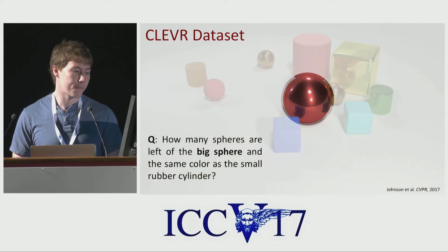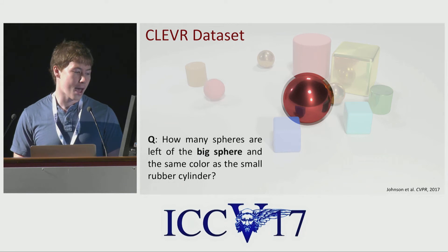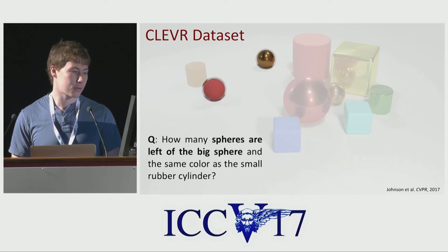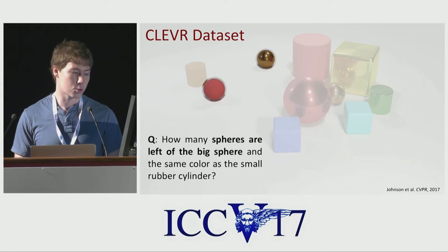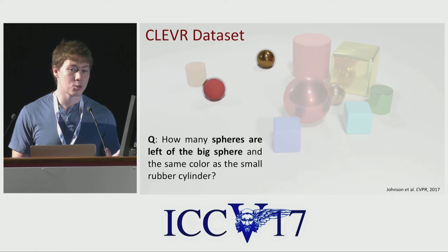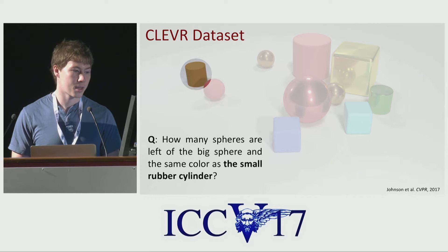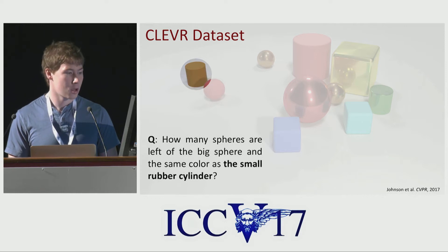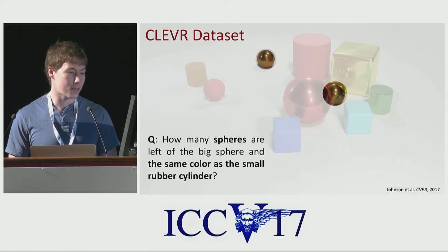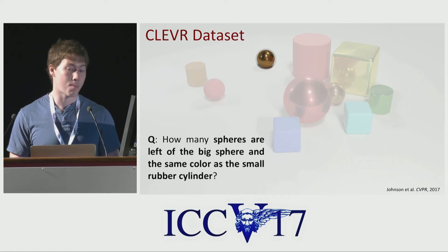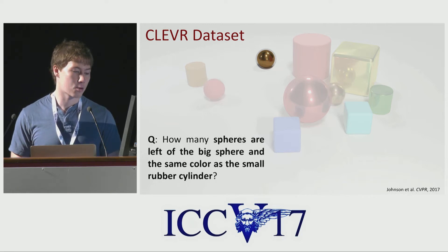To answer this question, we first need to identify the big sphere. Having done that, we need to find spheres left of the big sphere, which are over here. Now we need to set these two spheres aside in our memory and try to find the small rubber cylinder, which is here. After we find the small rubber cylinder, we need to find the spheres the same color as it, which are over here. Now finally, we need to combine these two sets of objects and arrive at our final answer of one.